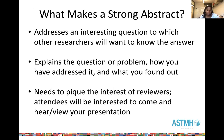What makes a strong abstract? We want to tell a compelling story about our work, so we want to present an interesting question that other researchers want to know the answer to. You also want to explain the question or problem, how you have addressed it, and what you found out. Very importantly, you want to place it into context for the rest of the field, specifying how you address this problem and explaining your particular findings. Essentially, you need to convince reviewers that other people will be interested to come and hear your presentation — that's what the program committee is looking for.